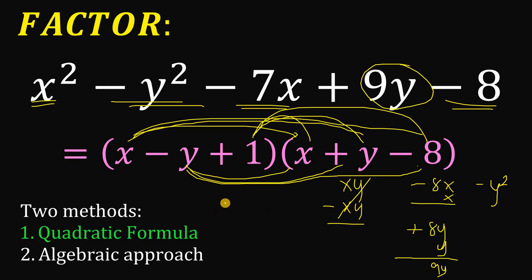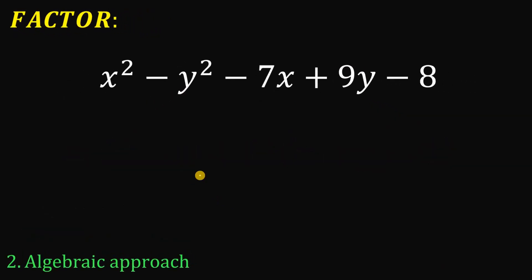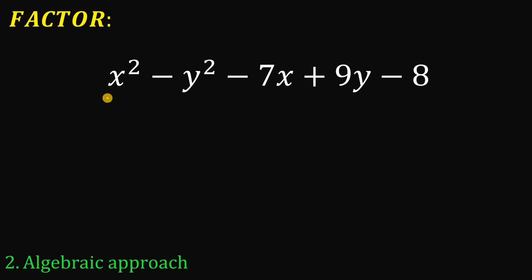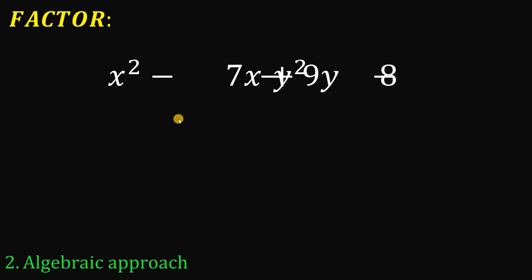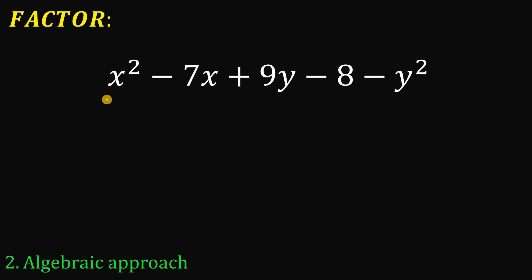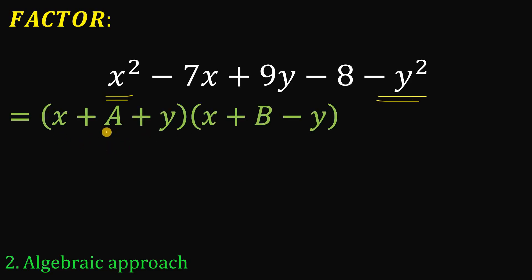Now let's look at the algebraic approach. Since we know this expression is factorable and contains x squared and negative y squared, we can assume it factors in the form x plus a plus y, multiplied by x plus b minus y, where a and b are constant terms. Multiplying x by x gives x squared, and y times negative y gives negative y squared as expected.